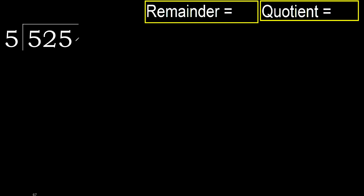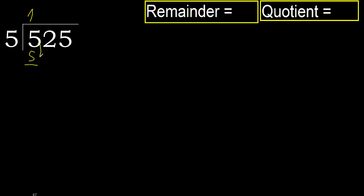525 divided by 5. 5 is not less, therefore with 5. 5 multiplied by which number is nearest to 5 but not greater? 5 multiplied by 2 is 10, which is greater. Multiplied by 1 is 5, it is not greater. 5 minus 5 is 0. Next. Eliminate 0 on this side, but 2 is less, therefore next.